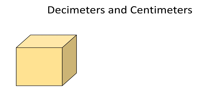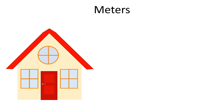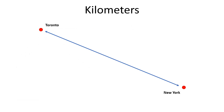We can use either centimeters or decimeters to measure larger objects. In our example, the height of a box is 7 decimeters or 70 centimeters. We can use meters to measure even larger objects — for example, the height of a house. In our example, the height of a house is 10 meters. For very long distances, such as the distance between New York and Toronto, we measure in kilometers. The straight line distance between New York and Toronto is 549 kilometers in our example.